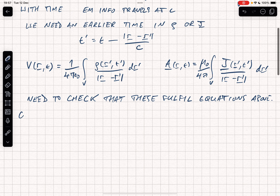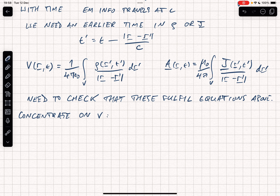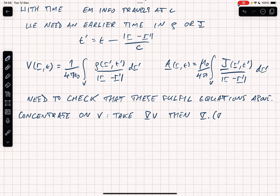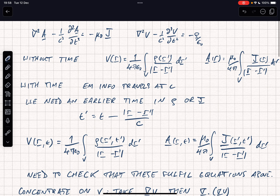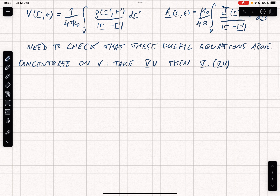We're going to concentrate on V — we could do the same for A, but it would be an entirely identical set of operations. We'll first take the gradient, then take the divergence of grad V. That gives us del squared V, which by the equation above should equal 1 over c squared d²V/dt² minus rho over epsilon naught. That's the plan.